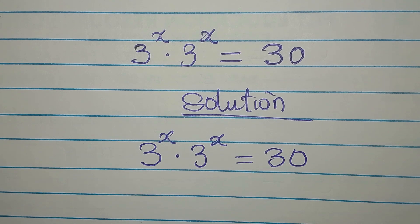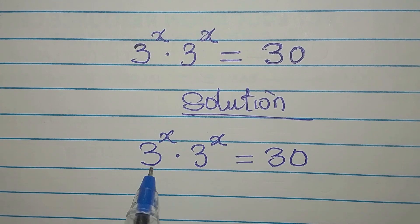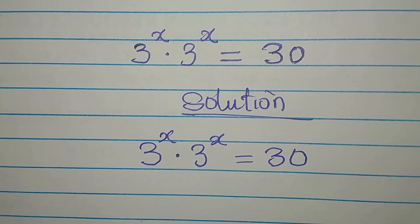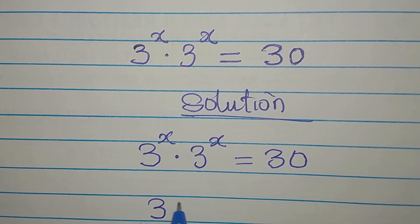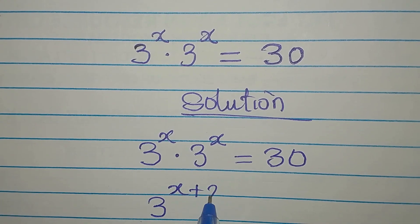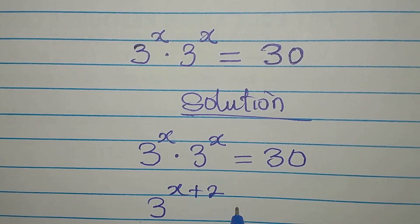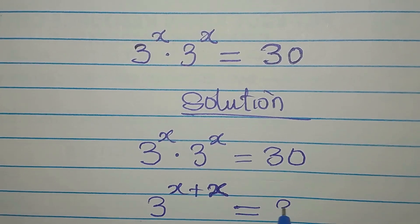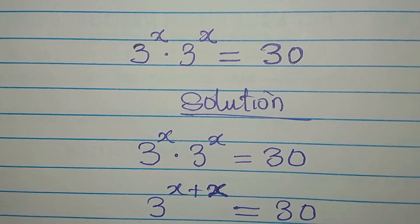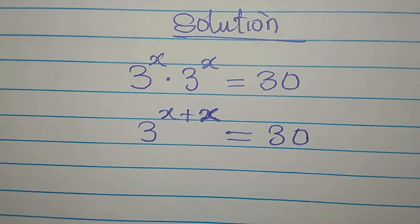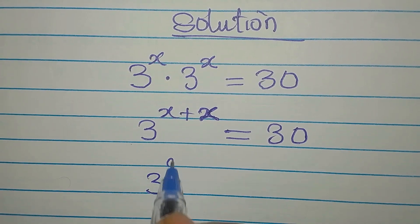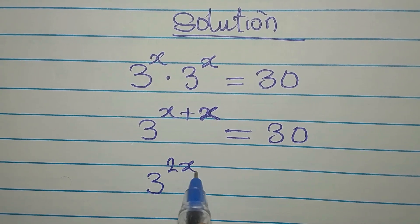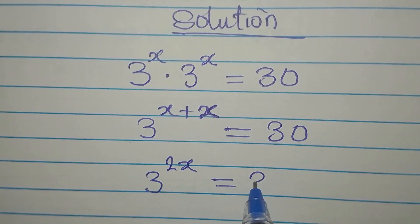What do we do here? We can pick the bases — the bases are the same. So if we pick one of them, then we add the powers. This gives us x plus x, and we have 30 on the other side. So 3 to the power of 2x will be equal to 30.